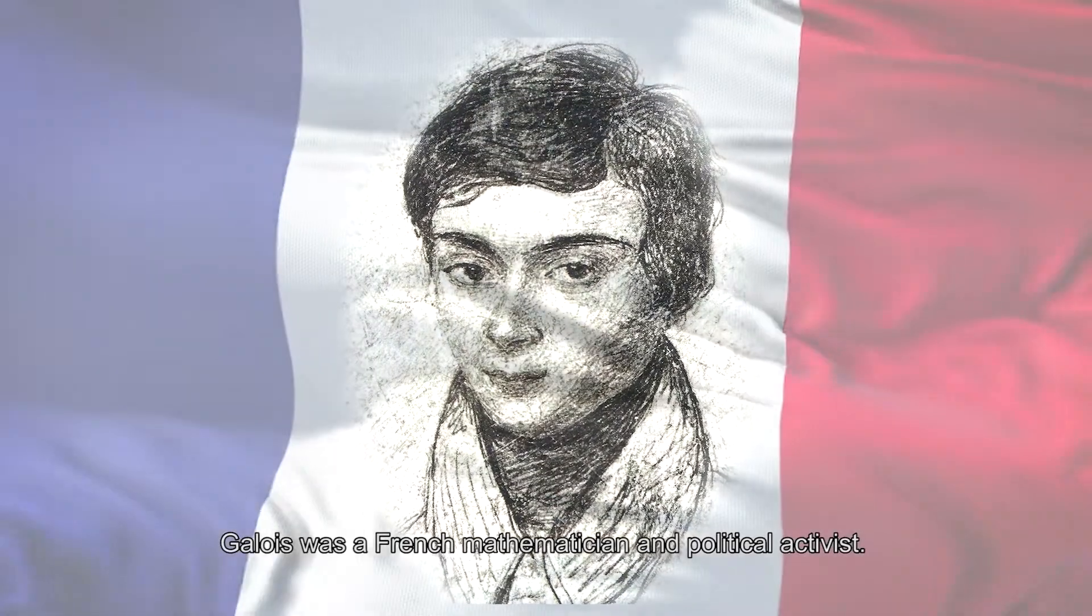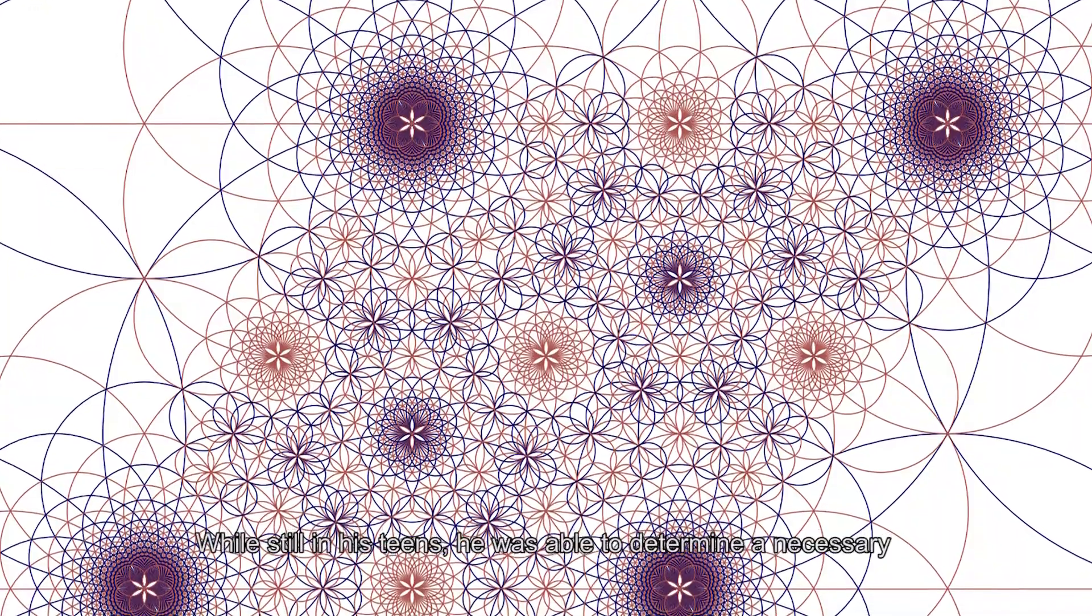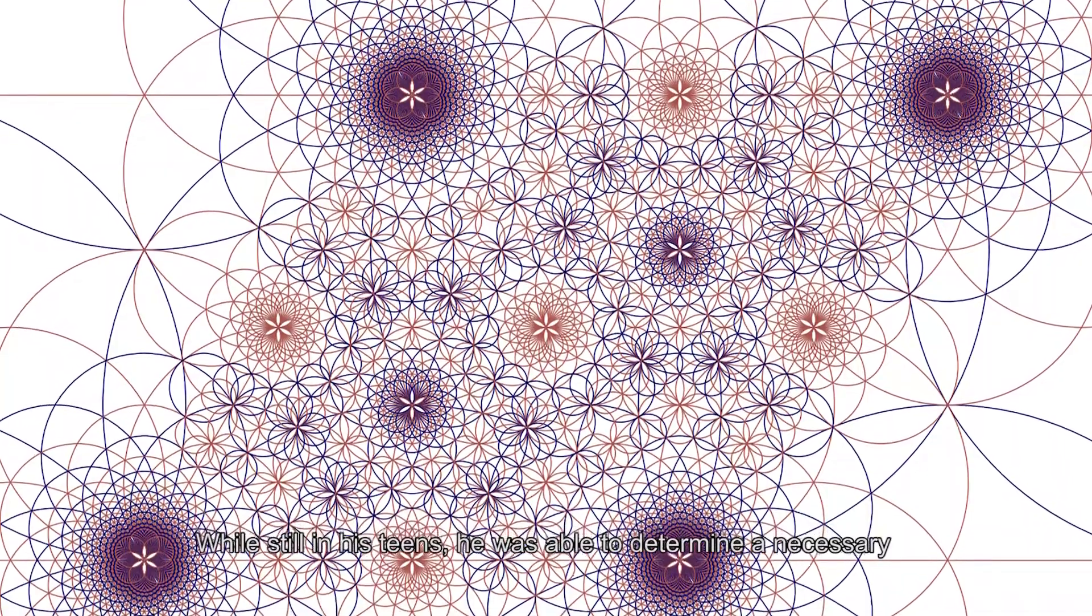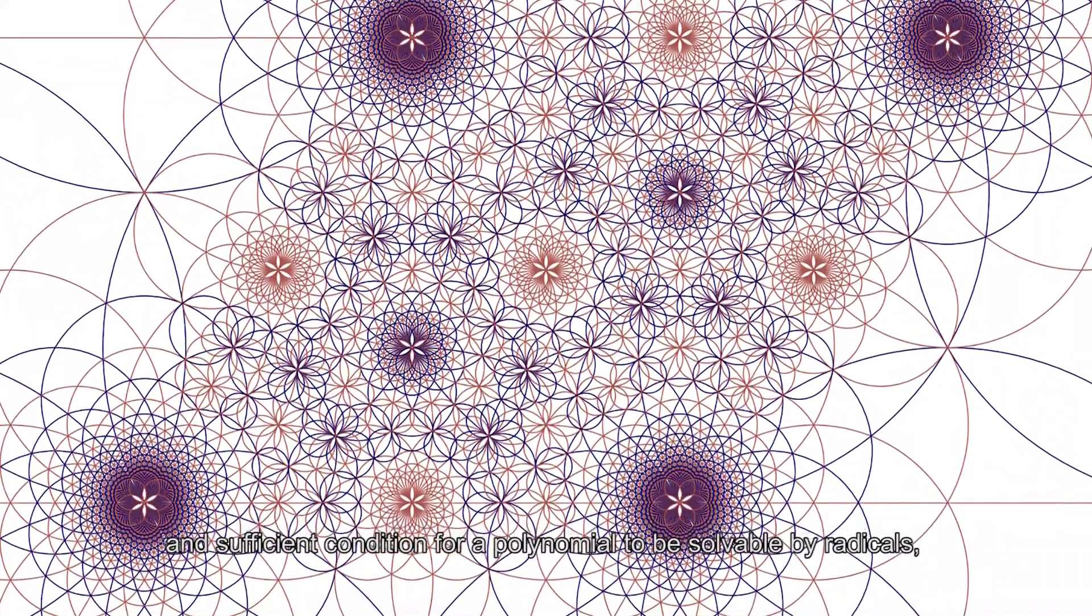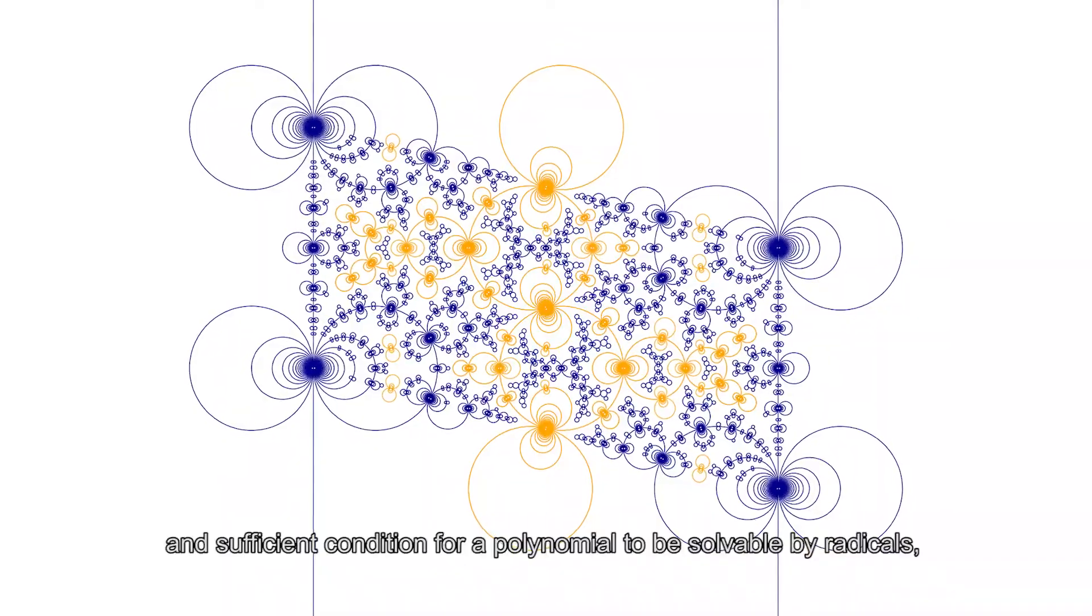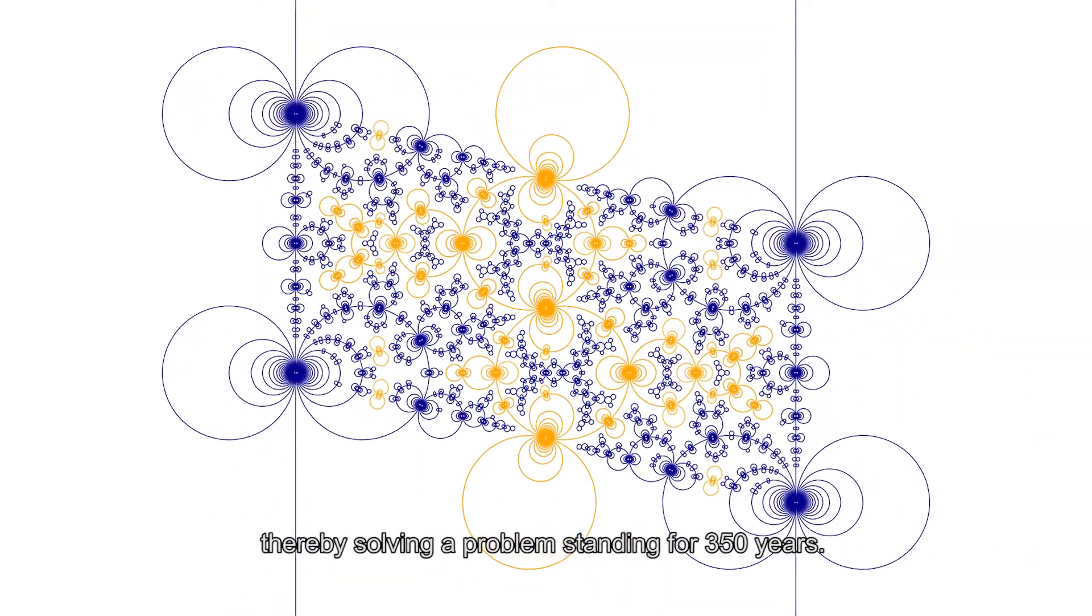Galois was a French mathematician and political activist. While still in his teens, he was able to determine a necessary and sufficient condition for a polynomial to be solvable by radicals, thereby solving a problem standing for 350 years.